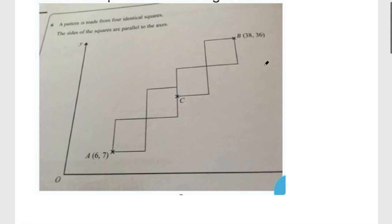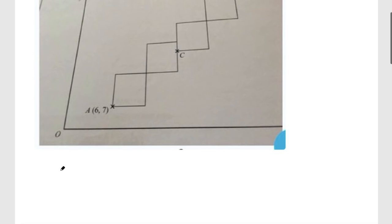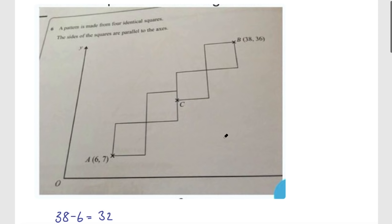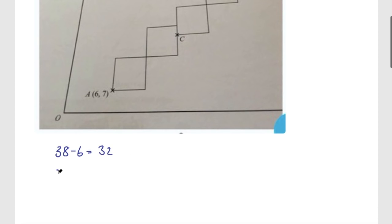So we can say 38 minus 6, that's 32, and that's four sides of the square. So we need to do 32 divided by 4 to get the side length of the square. That'll be 8.